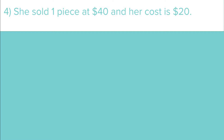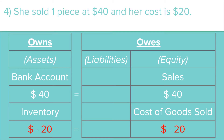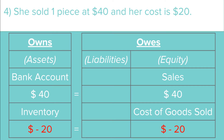One week later, she made her first online sale — she sold one piece at $40 and her cost is $20. There are two transactions here. First, when she made the sale, her bank account increases by $40, which is what she owns, and her equity — the sales revenue — increases by $40 as well. Second, the inventory is reduced by $20 because that's the cost of the clothes, reducing what she owns, while her cost of goods sold, which falls under equity, also reduces by $20.